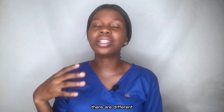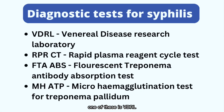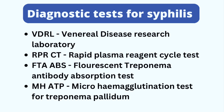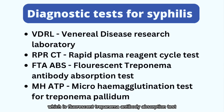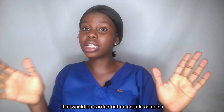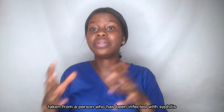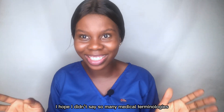How is syphilis diagnosed? There are different laboratory investigations that may be carried out. One of these is VDRL — Venereal Disease Research Lab. Another is RPRCT — Rapid Plasma Reagent Circle Test. Another is FTA-ABS — Fluorescent Treponema Antibody Absorption Test. And there is MHATP — Micro Hemagglutination Test for Treponema pallidum. These tests are carried out on samples from a person who has been infected or suspects infection.